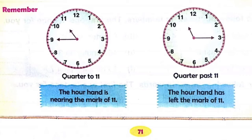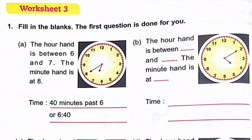It is 'quarter to' when the hour hand is nearing the next number — that means 15 minutes before. For example, quarter to 11 means 10:45. 'Quarter past' means 15 minutes after the hour — so quarter past 11 means 11:15.